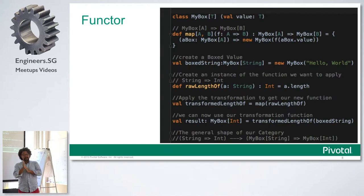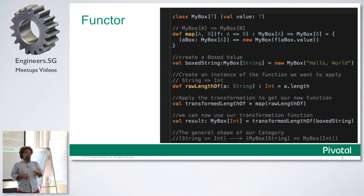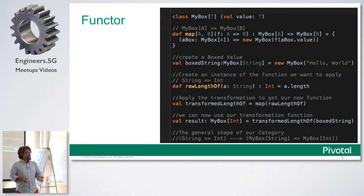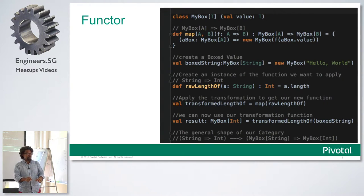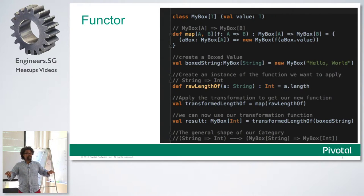Let me first explain the objective here. The use case is: we have this type called MyBox. A MyBox can contain any other type — you can have a MyBox of String, a MyBox of Integer, a MyBox of anything. It could be a Future, an Option, a sequence — anything that contains something else. In our case, I've specifically made it a MyBox. It's not a collection — it holds a single value of the same type as the type constructor.